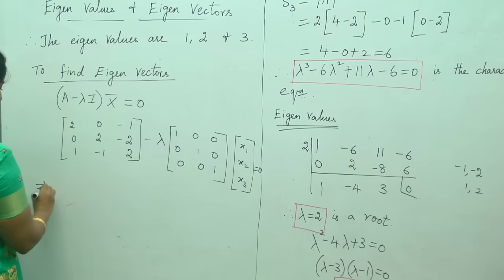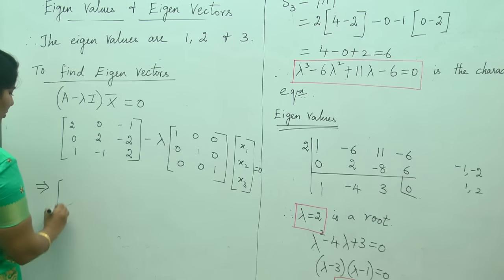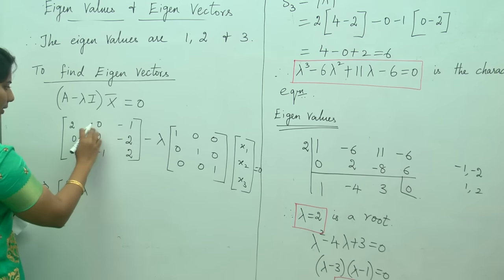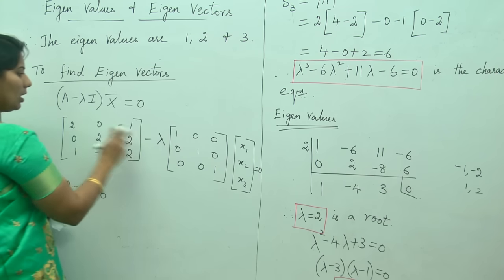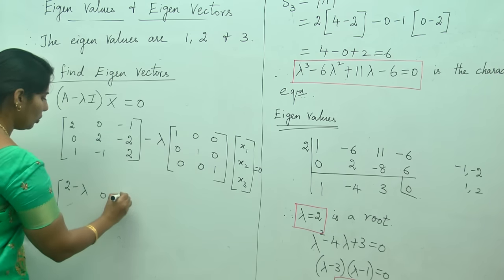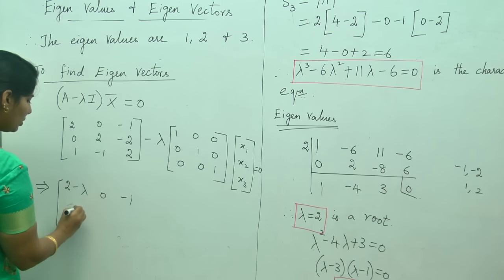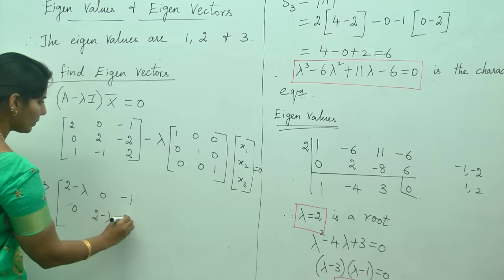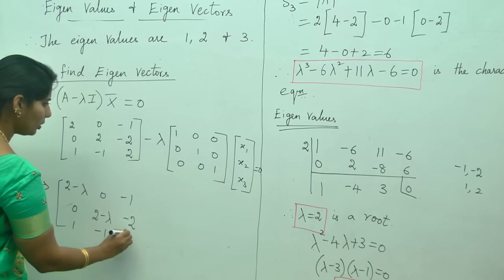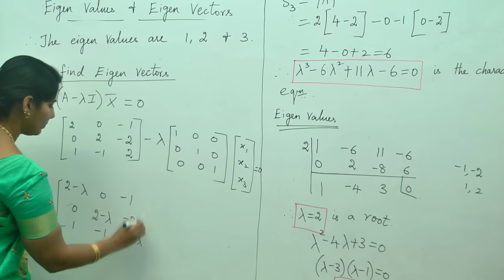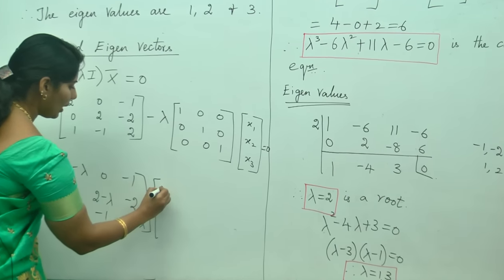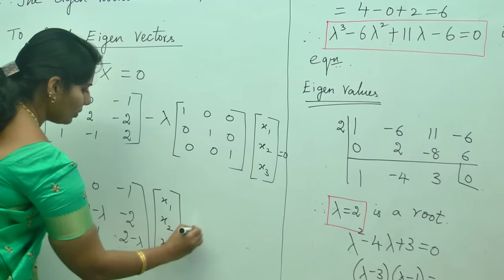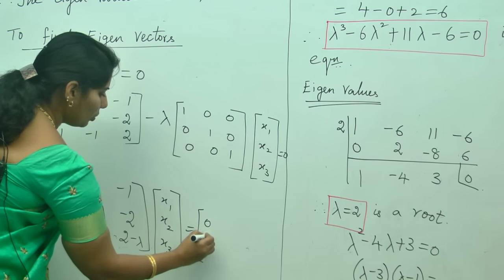Expanding this gives: (2 minus lambda) in the diagonal positions, with the rest remaining as is since it is minus 0. This results in the matrix [2−λ, 0, −1 / 0, 2−λ, −2 / 1, −1, 2−λ] times [x1, x2, x3] equals [0, 0, 0].